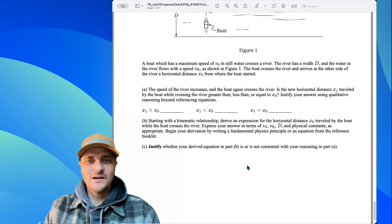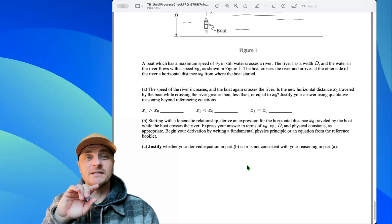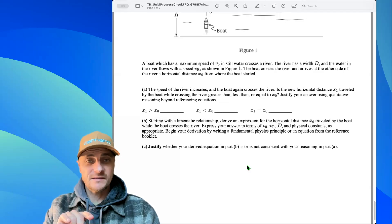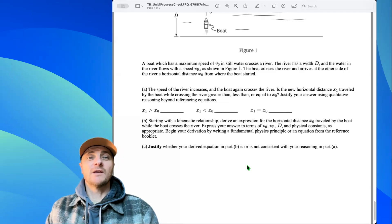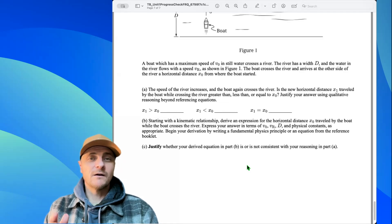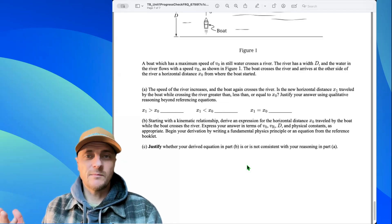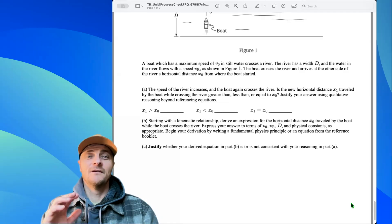My reasoning in part a was that if the river velocity increased, I would achieve a greater distance x-1 versus x-naught. Looking at the equation x-naught equals v-r times t, if I increase v-r, x-naught would increase because they are directly proportional, period.